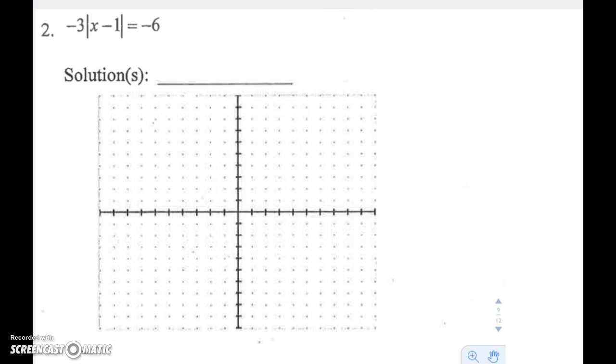Alright, so what you notice here is that we have an absolute value function, but instead of y, we have negative 6. The easiest way for me to solve this is to set up a system of equations. What we're really looking for are the values of x when y is equal to negative 6. So here's what I'm going to think about instead.